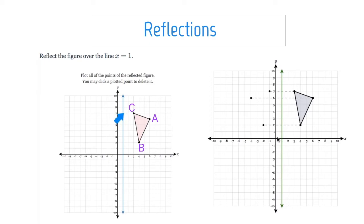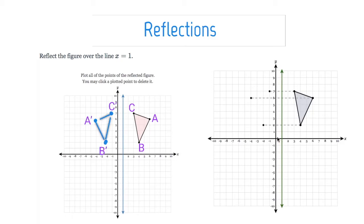I count one, two boxes to the line, then go that exact amount across the line — one, two. So that's where my C prime is going to end up. A prime is five boxes away on each side. And then B prime is three boxes on each side. So I can go ahead and draw in those lines. Here you can see A prime, B prime, C prime — it's been reflected over this line.